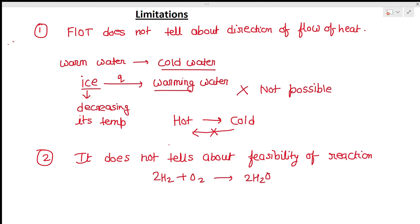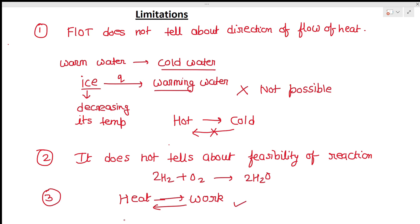A third limitation: the first law states that energy of one form can be converted into an equivalent amount of another form, but it does not tell us that heat cannot be converted completely into work. Work can be converted 100% into heat, but heat cannot be 100% converted into work. To define this, we need the second law of thermodynamics.